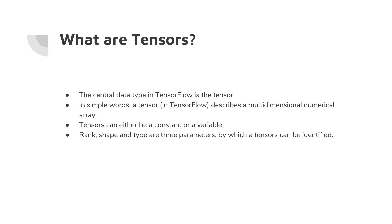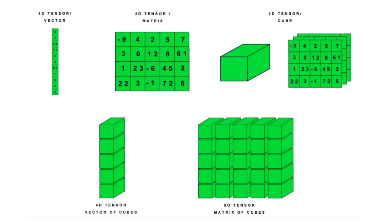There are three parameters by which a tensor can be identified, and those parameters are rank, shape, and type. We'll be going through all these parameters one by one in the further part of this video.